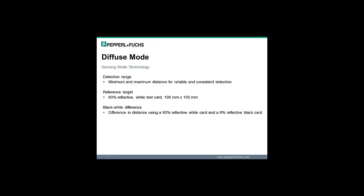Common terms found on the data sheet for a diffuse mode sensor: the detection range is the minimum and maximum distance for reliable and consistent detection of a reference target — a 90% reflective white test card that is 100mm by 100mm in size. The black-white difference is the difference in detection distance using a 90% reflective white card and a 6% reflective black card under the same conditions.